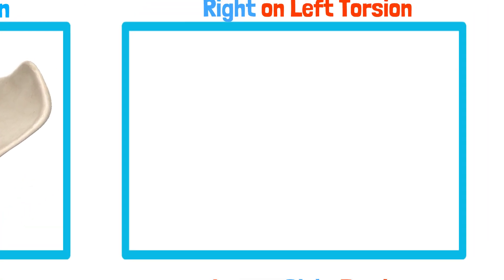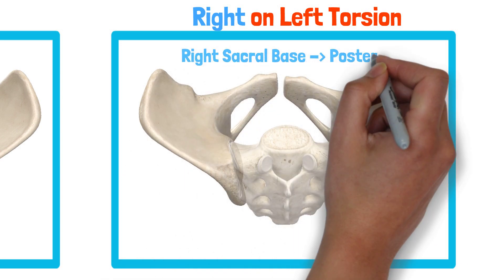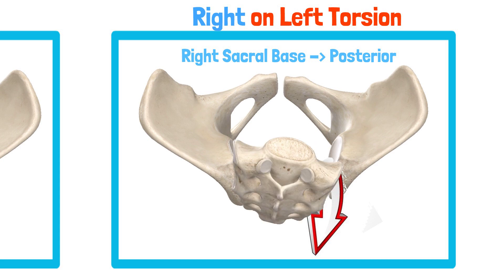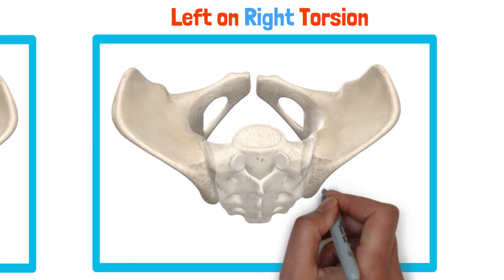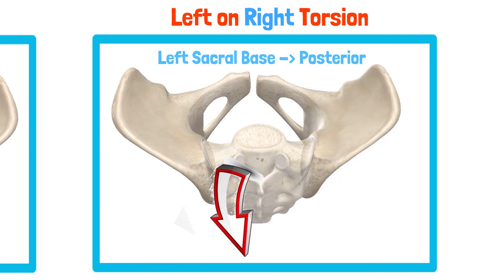Now let's take a look at the right-on-left sacral movement. Here, we observe the right sacral base move posterior. And finally, let's take a look at left-on-right oblique axis rotation — here, we observe the left sacral base move posterior.